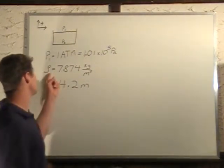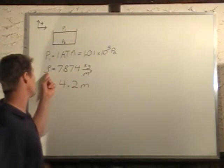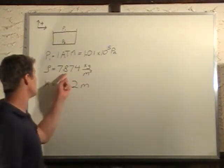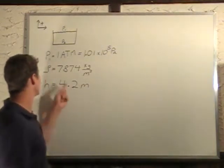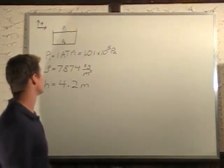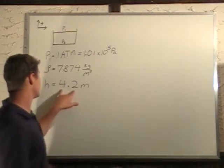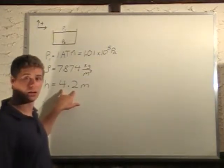We're also told that the density of the liquid, so this is a row, looks like a pea but it's a row, is 7874 kilograms per cubic meter. The height of the vat is 4.2 meters, so this height of the vat is also the height of the adamantium.